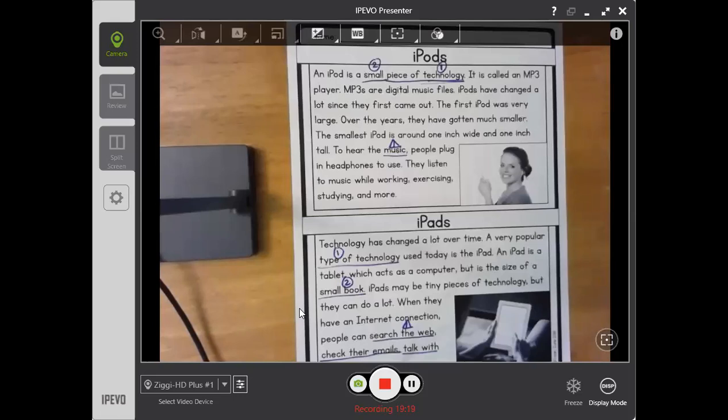Over the years, they have gotten much smaller. The smallest iPod is around one inch wide and one inch tall. To hear the music, people plug in headphones. They listen to music while working, exercising, studying, and more.